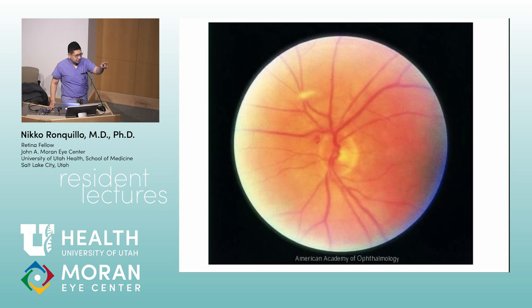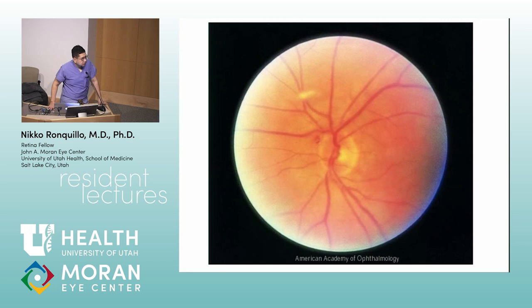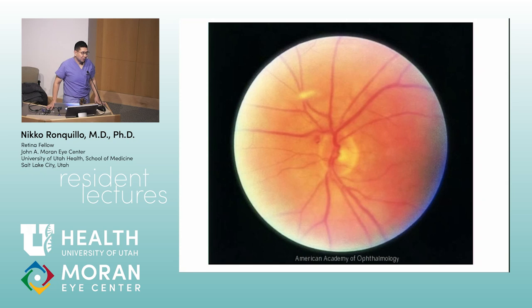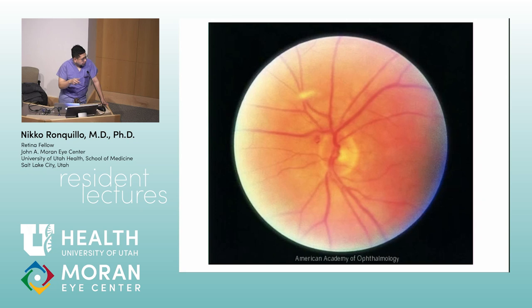First question — group one, what's the diagnosis? Some of the pictures are not the best, but that's not an excuse. This is a PVD. That white string you're seeing right there floating around — that's a PVD. Not very good picture, that's one of the worst ones. No points for that. Let's talk about PVD and how it happens.